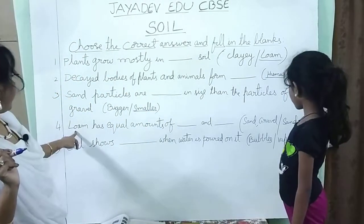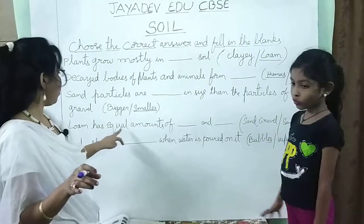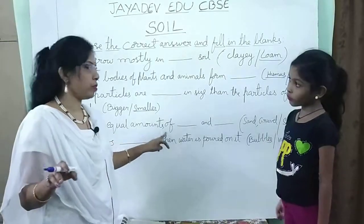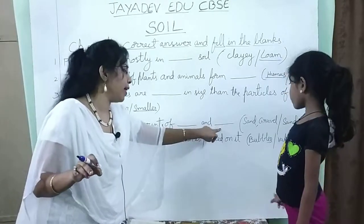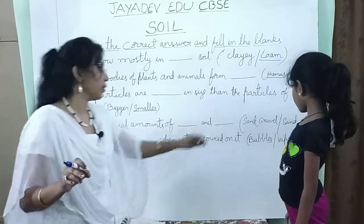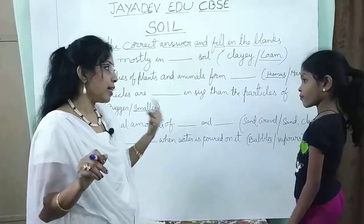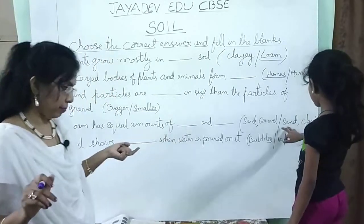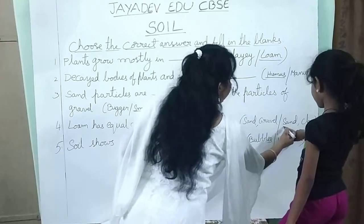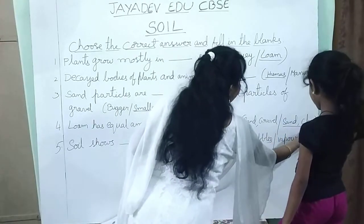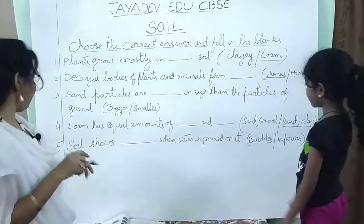Fourth one is: loam has equal amounts of dash and dash — sand gravel or sand clay? Sand and clay is the correct answer.